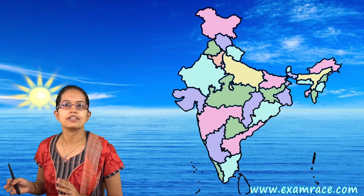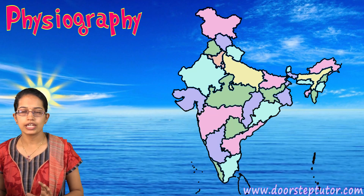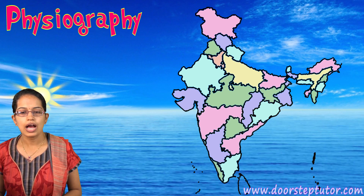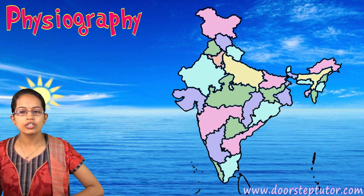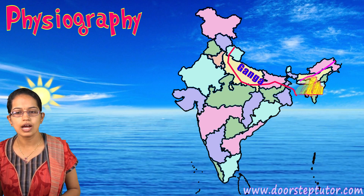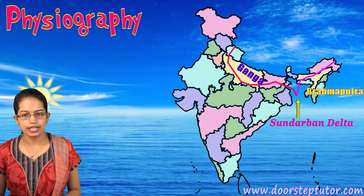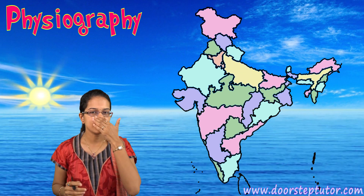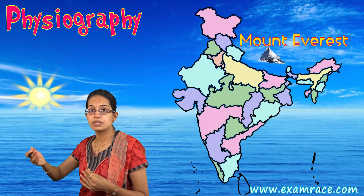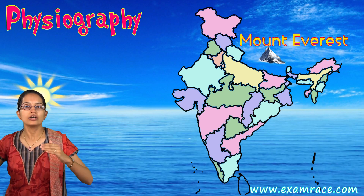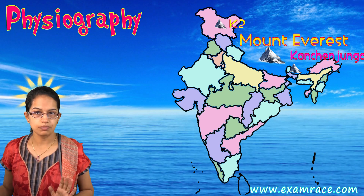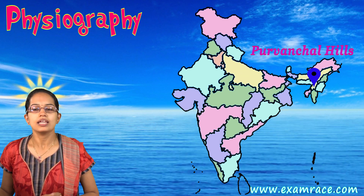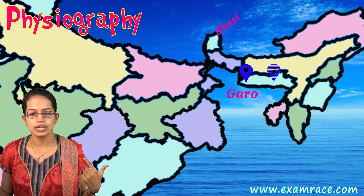Coming to the physiography of India — a quick introduction here, with detailed coverage in the next chapter. In the north, the Ganga and Brahmaputra are major rivers; Ganga and Brahmaputra meet to form the Sundarbans delta. In the north you have the Himalayas, divided into Lower Himalaya, Middle Himalaya, Upper Himalaya, and Trans-Himalaya. Mount Everest, the highest peak, lies in Nepal; India has other major peaks like K2 and Kanchenjunga. In the northeast are the Purvanchal hills, and in Meghalaya you have the Garo, Khasi, and Jaintia hills.